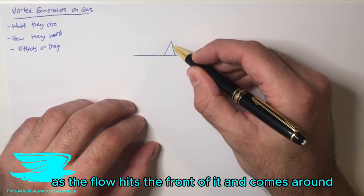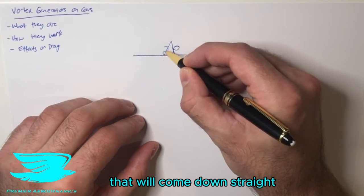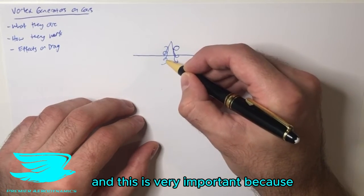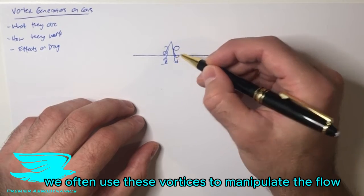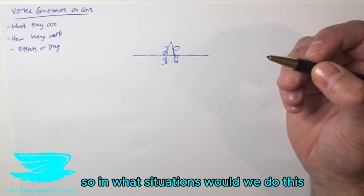As the flow hits the front of it and comes around it, it will start to create two vortices that will come downstream. This is very important because we often use these vortices to manipulate the flow.